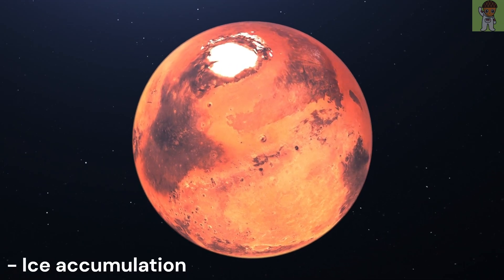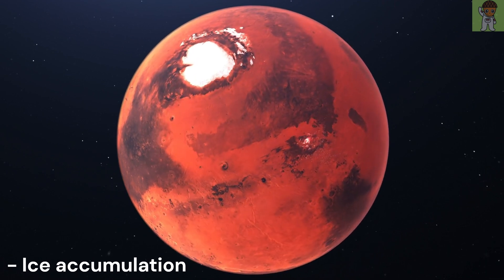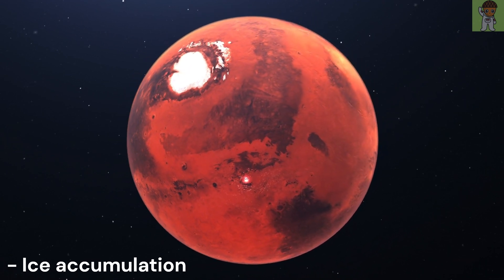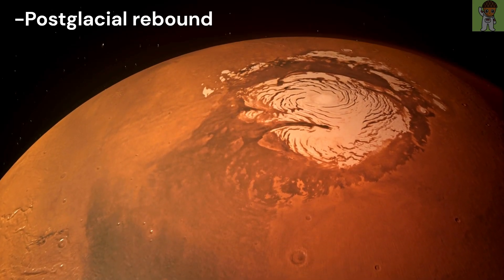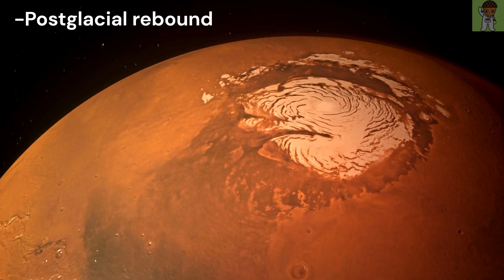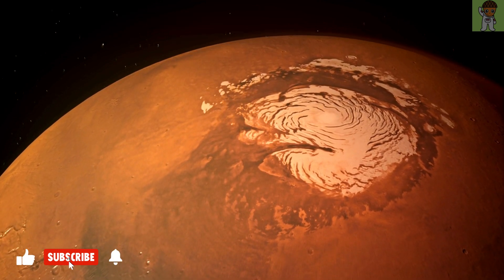Two leading theories explain the speed-up. The first is that ice accumulation at the planet's poles is causing a slight change in how its mass is distributed, and the second is a phenomenon called Post-Glacial Rebound, where land masses rise up after millennia buried under ice.